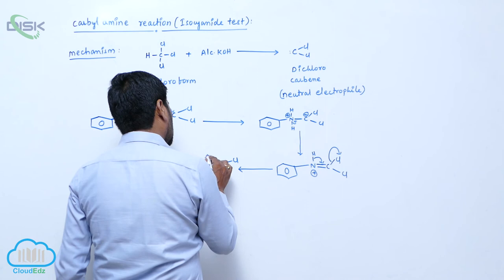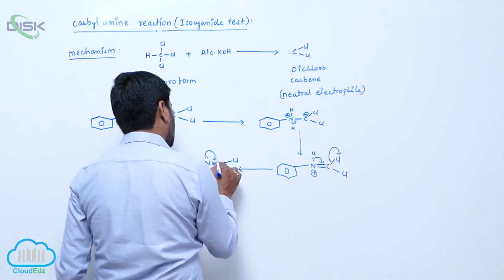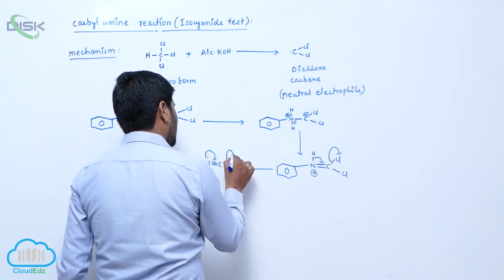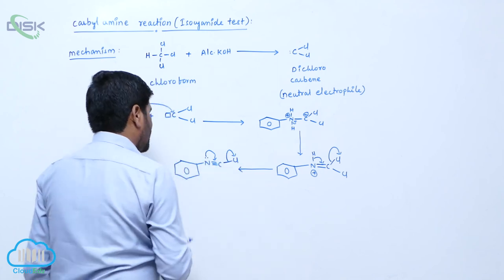Now this nitrogen lone pair of electrons is involved here. Plus of Cl, then loss of Cl minus again.